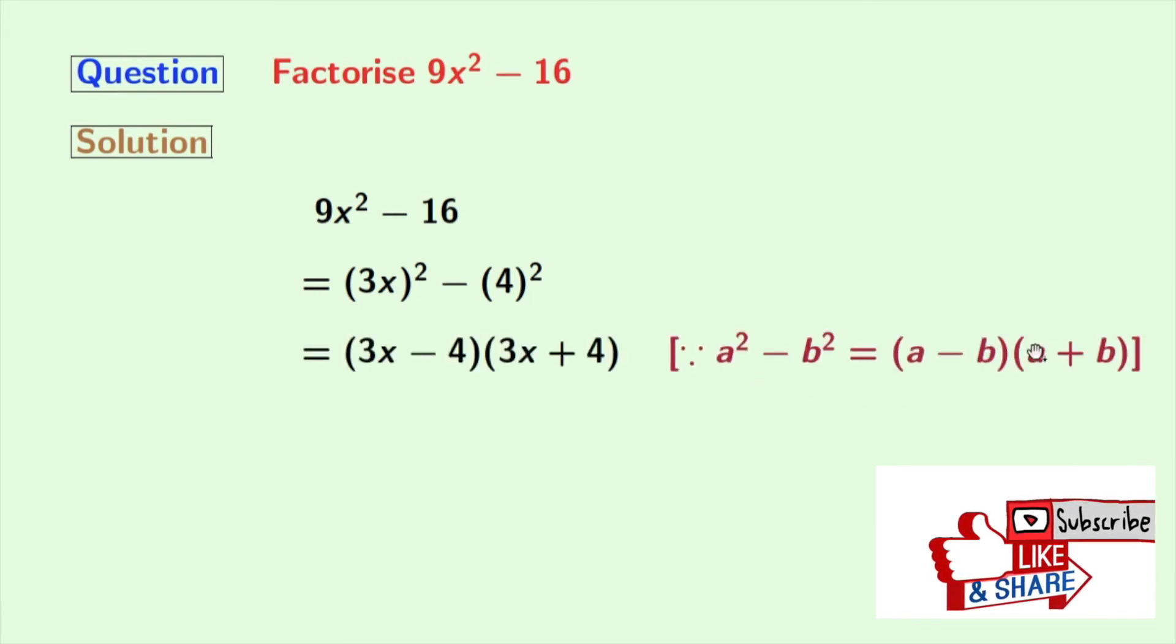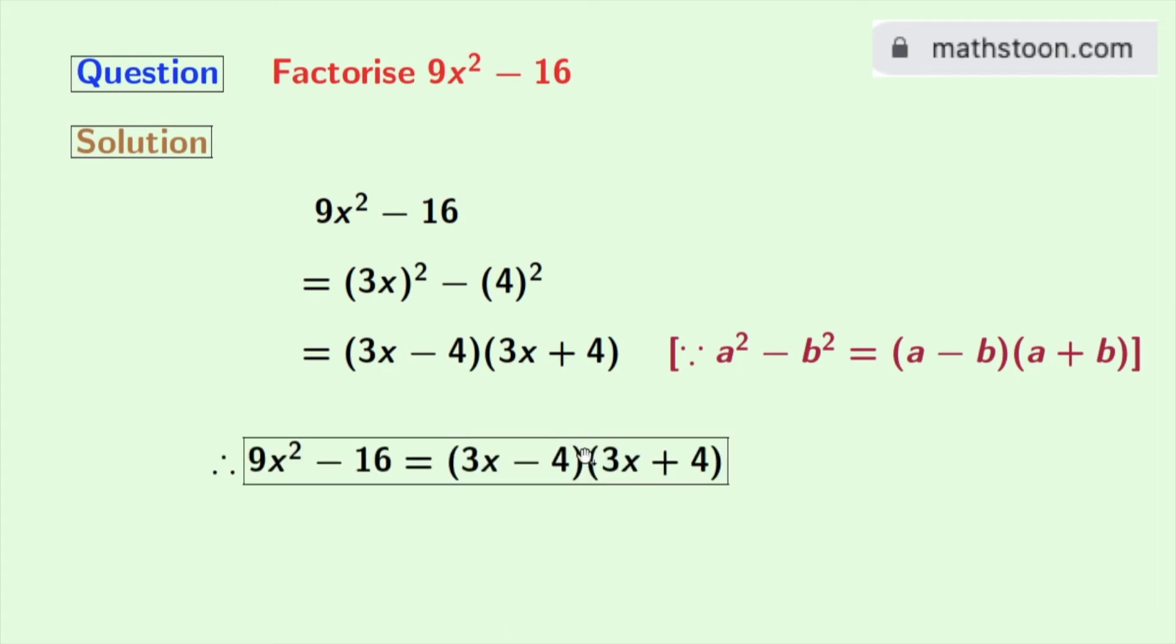This is the given formula. Applying this in this expression, we get 3x minus 4 times 3x plus 4. So our desired factorization of 9x square minus 16 is 3x minus 4 times 3x plus 4.